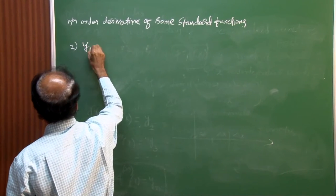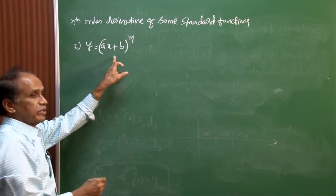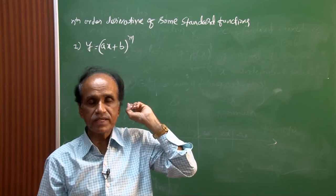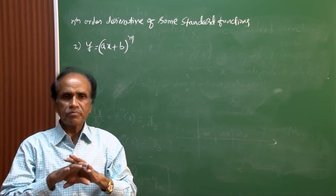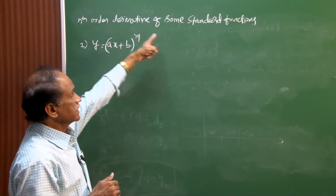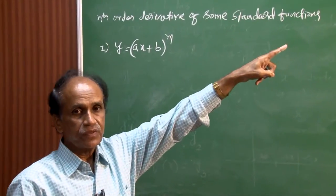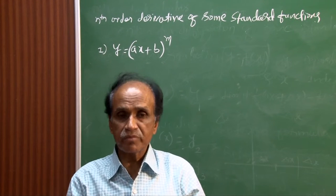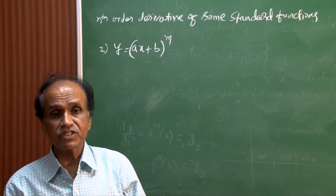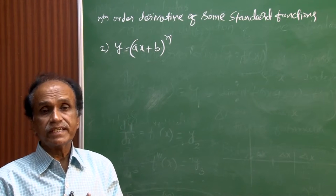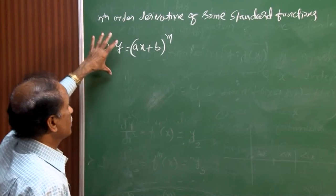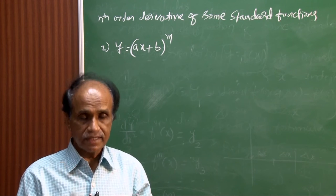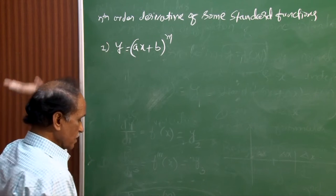The nth order derivative of some standard functions — Result 1: y = (ax + b)^m. This is the first result and problems in exams typically start with this result. Standard functions fall into four varieties: algebraic functions, logarithmic functions, trigonometric functions, and products of trigonometric and exponential functions.